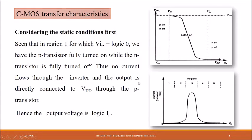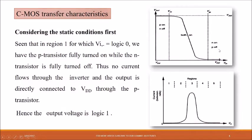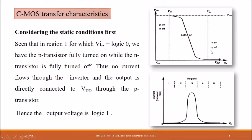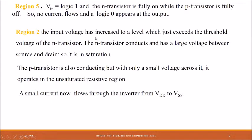In Region 5, when Vin equals logic one, the N transistor is fully on while the P transistor is fully off. No current flows and logic zero appears at the output. When P is off, it is an open circuit, so no VDD flows to the output. Since N is on and connected to ground, it acts as a sink, the capacitor discharges, and a minimum value appears at the output side.